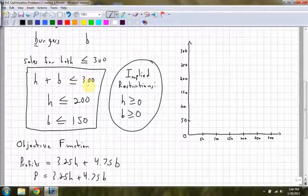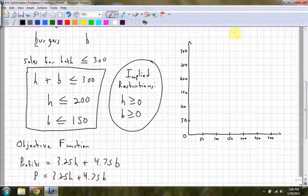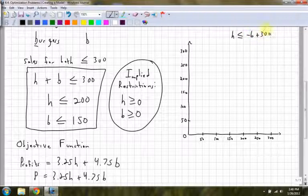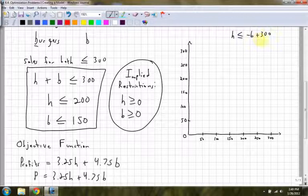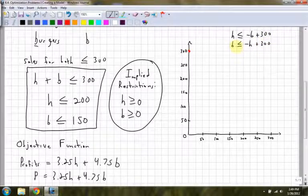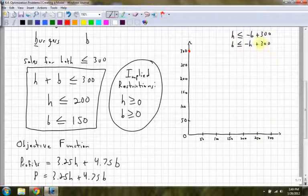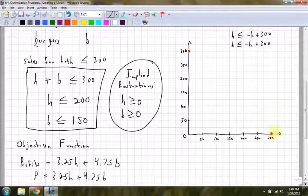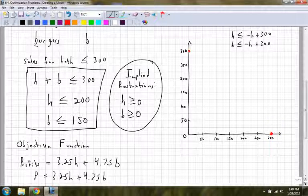So I'm going to graph these now. The first one I have is H plus B is less than or equal to 300. If I rearrange the variables, I could have H is less than or equal to negative B plus 300. So I moved the B over and the 300 is positive. What that means is that my intercept on my H is up at 300. And what is my slope? It means it's a negative 1 over 1 slope. I could have also solved this for B and said B is less than or equal to negative H plus 300. I'm looking on my B axis, and my B axis also has an intercept of 300. So that line is going to go straight down all the way. Let me just grab a ruler here.